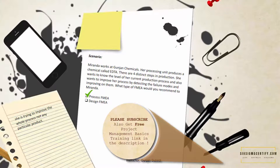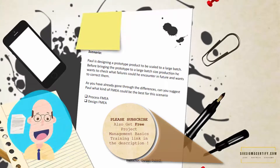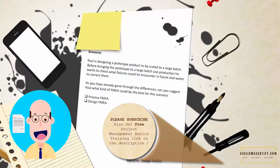Paul is designing a prototype product to be scaled to a large batch. Before bringing the prototype to large batch size production, he wants to check what failures he could encounter in the future and wants to correct them. As you have already gone through the differences, can you suggest what kind of FMEA would be best for this scenario — Process FMEA or Design FMEA?